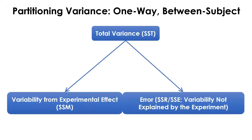In ANOVA, the F-ratio is calculated by partitioning the total variance into two component variances. In the case of one-factor between-subject ANOVA, the total variance, denoted as SST, is divided into the variance due to the experimental effect, denoted as SSM, and the remaining variance, which we call the error sum of squares, SSE.